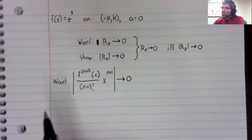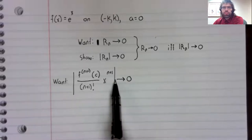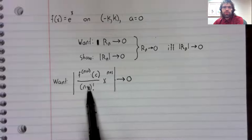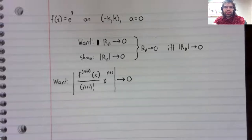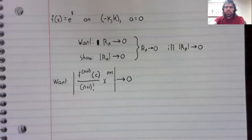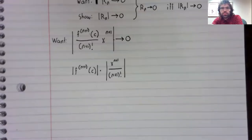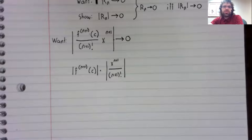Now, absolute values work well with quotients and products. That is to say, the absolute value of a product is the product of absolute values, and similarly for quotients. So we can rewrite this a little, like so.